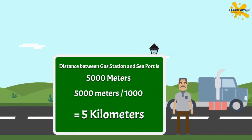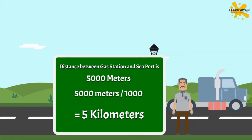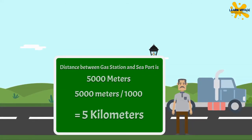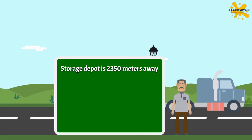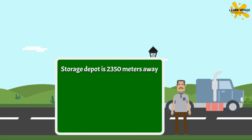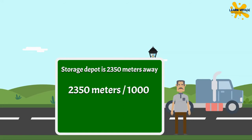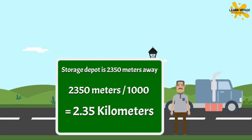If you guessed it correct, great work! And if your answer was not matching, practice more and give it another try. The storage depot is 2350 meters away from here — how much will that be in kilometers? You need to divide 2350 meters by 1000, and you will get 2.35 kilometers.